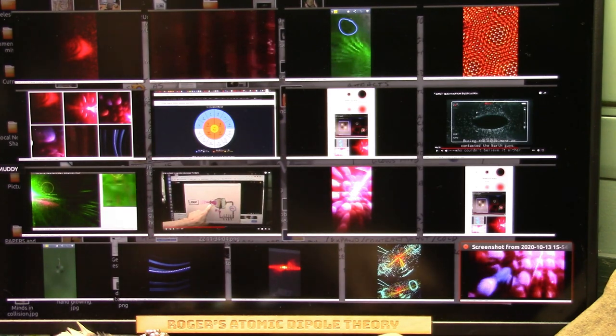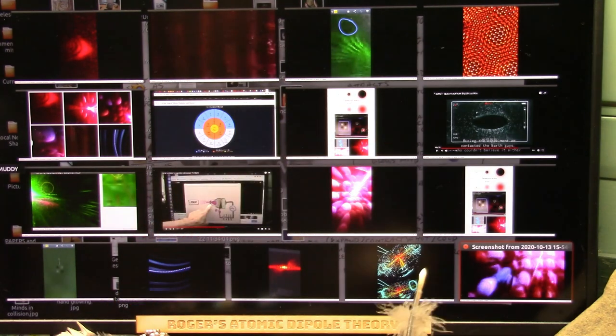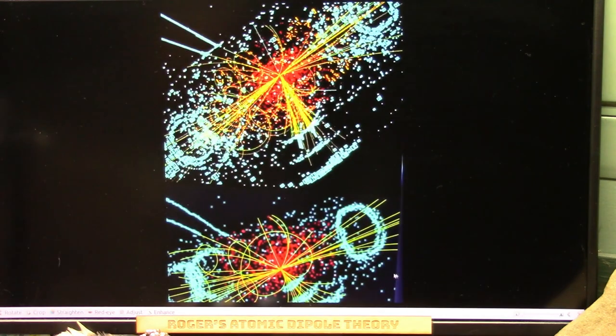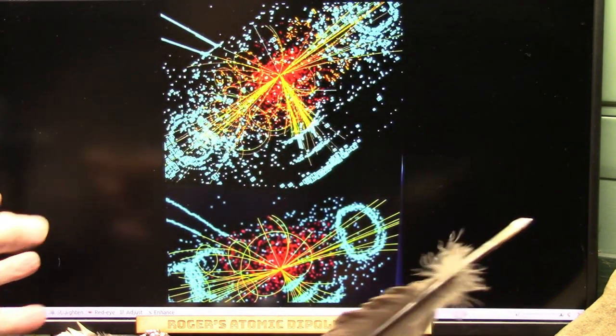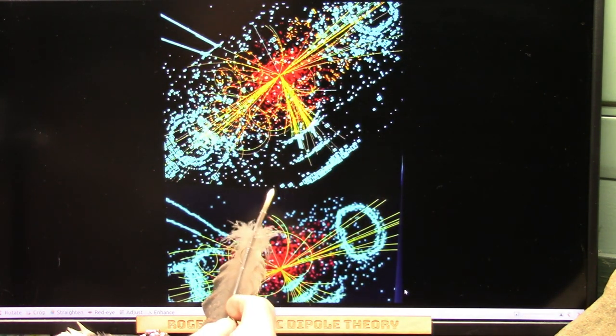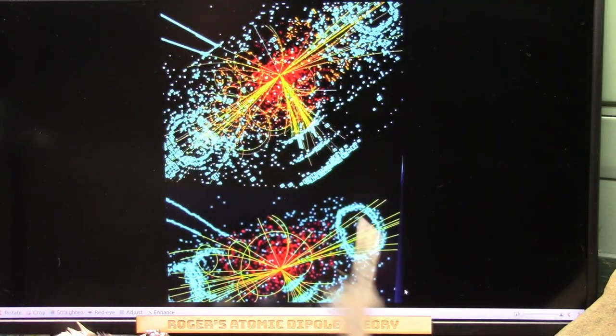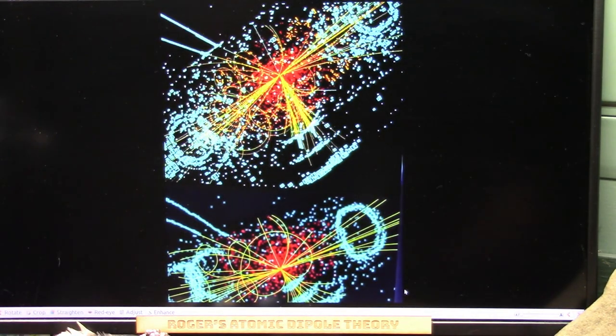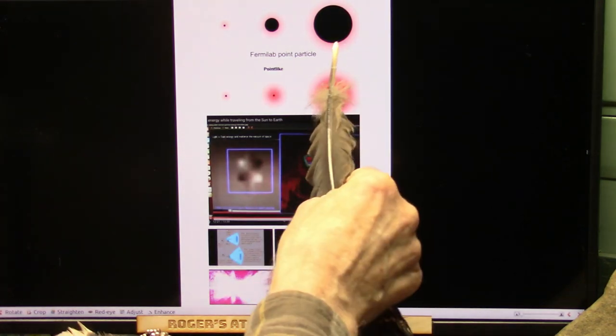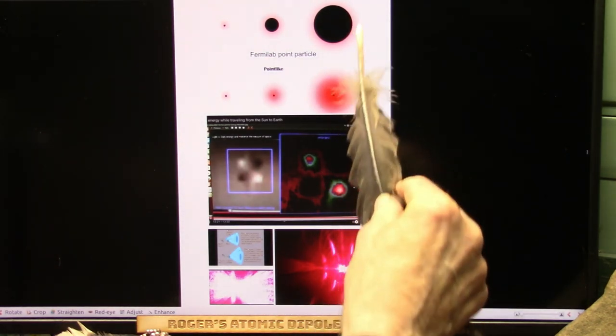They're talking about Higgs fields and all of the elementary particles. This is the new model. Let me show you what they're talking about for Higgs fields because they are crashing things head-on. This is what they found in 2013. Don Lincoln from Fermilab announced these particles were found.